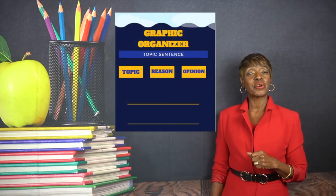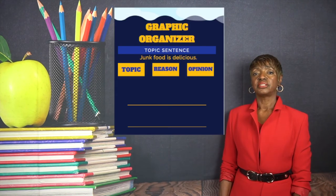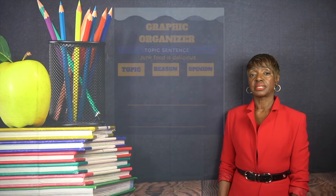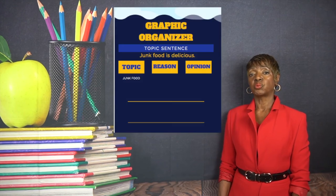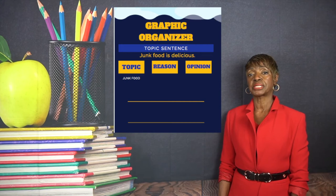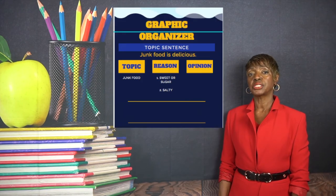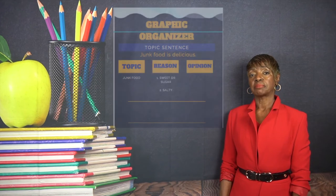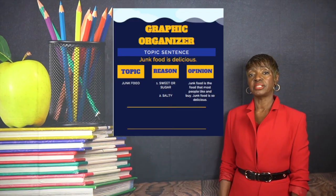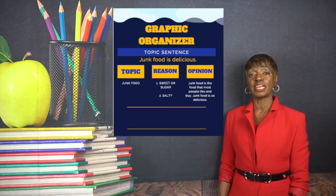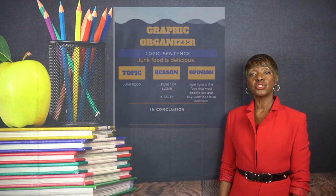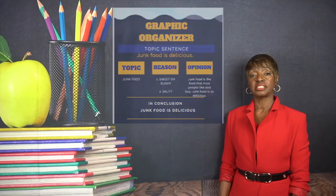Here is our graphic organizer. 'Junk food is delicious' is my topic sentence. I have reason one and reason two to support my topic sentence. Reason one: sweet or sugary. Reason two: salty. I also have an opinion — junk food is the food that most people like, eat, and buy. In conclusion, junk food is good.